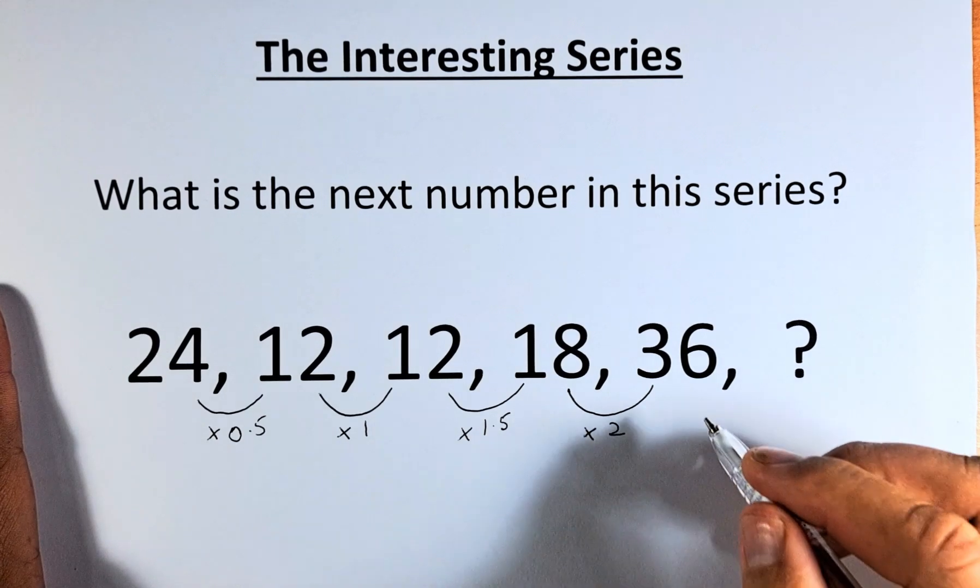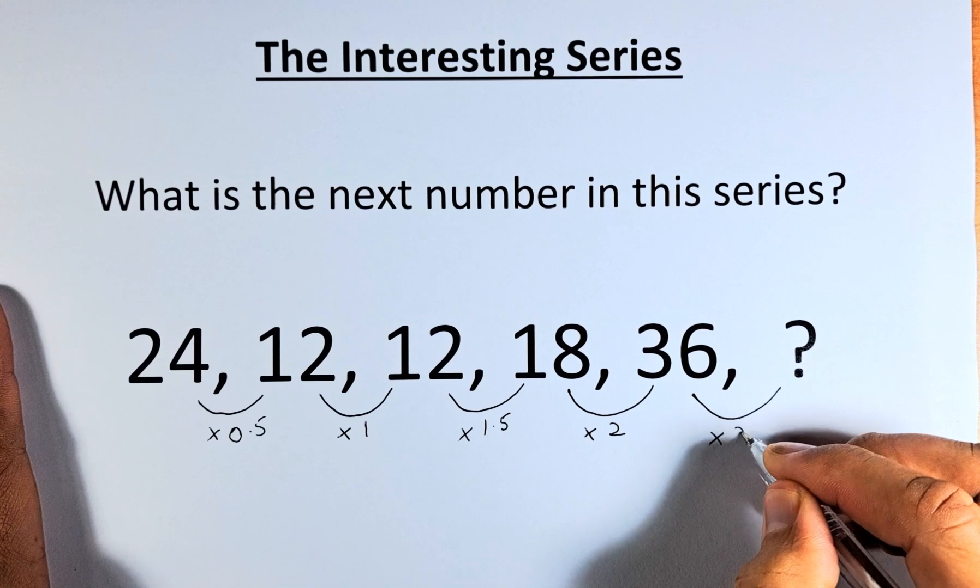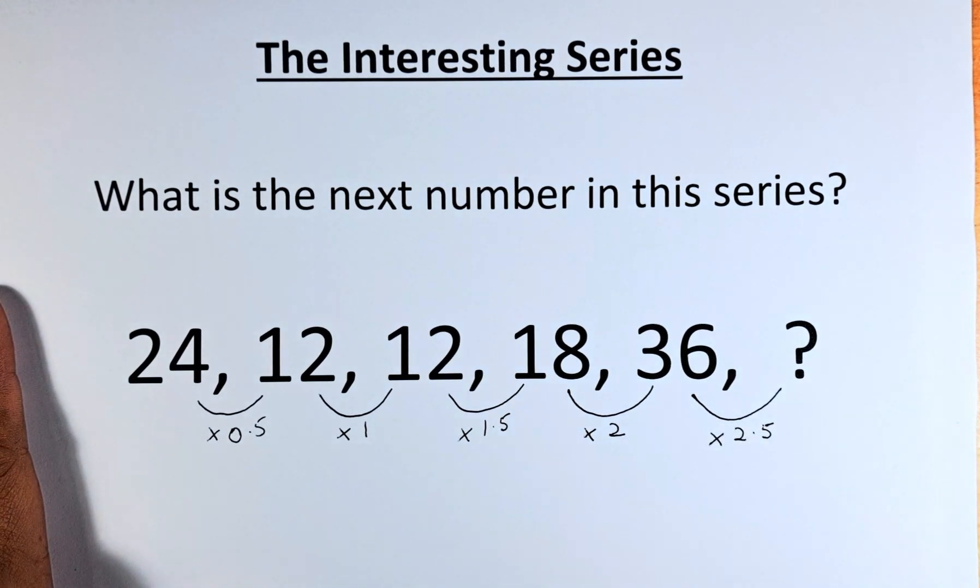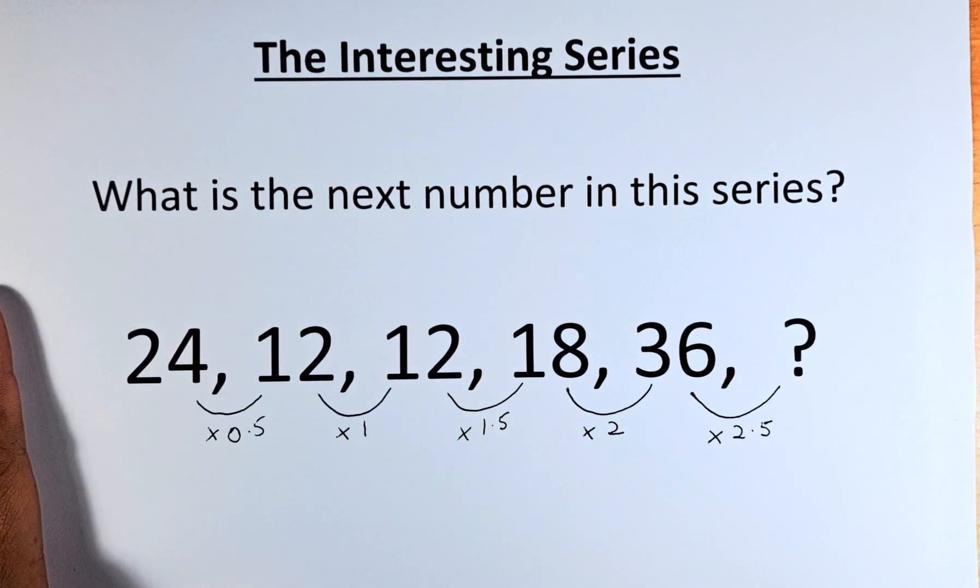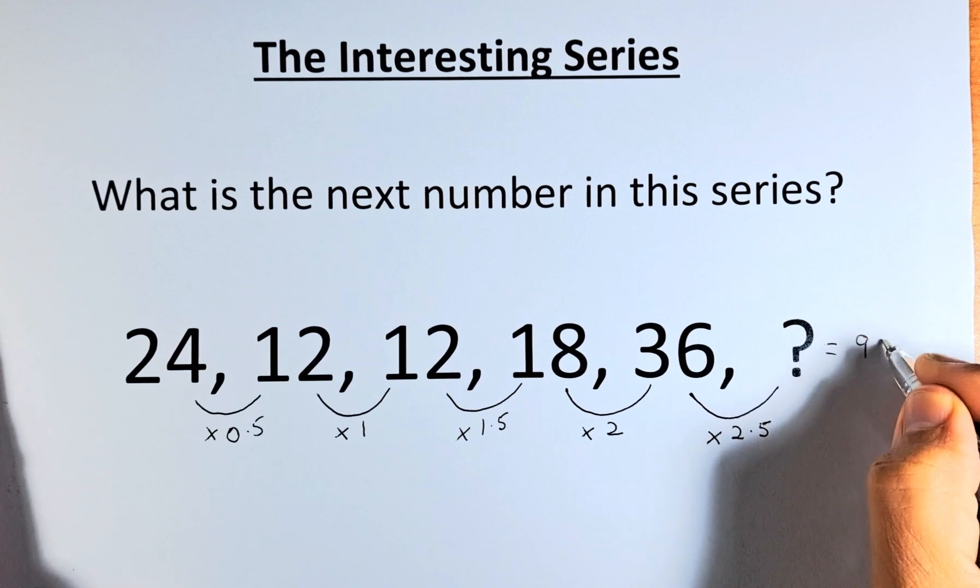And last but not least, we need to get a number from 36 to the question mark, and we need to multiply by 2.5. If you are good in mathematics, you can get the answer straight away. If not, use your calculator, and the answer is going to be 90.